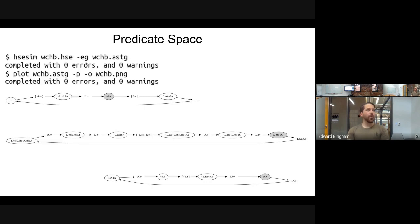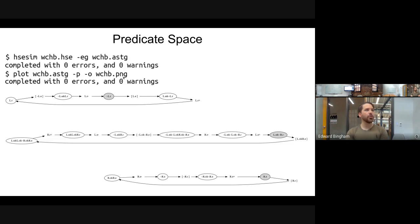We can generate the predicate space by calling hsc_sim to elaborate the state graph, saving it into an asynchronous signal transition graph, and then plotting the predicate space into a PNG file. At each place we have a given predicate.